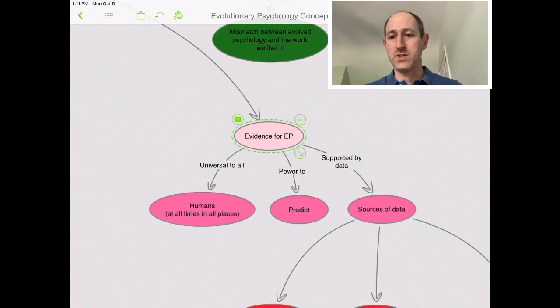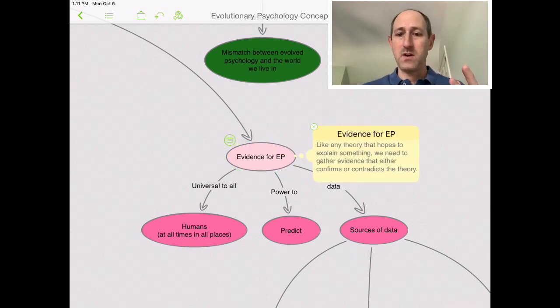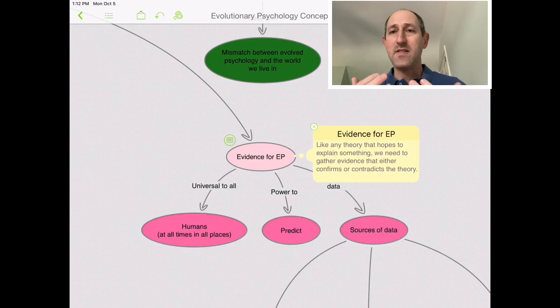In terms of evidence for evolutionary psychology, how can we, with a theory that says I'm going to help you explain human behavior, actually know that this theory is a good one? Any theory that we have to explain anything, we need to come up with evidence. We need to gather evidence, and the evidence may confirm the theory or contradict the theory. And it may be mixed, and that doesn't mean we throw it out. It may mean we have to look closer.